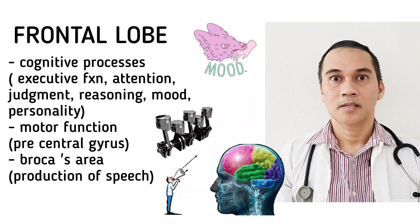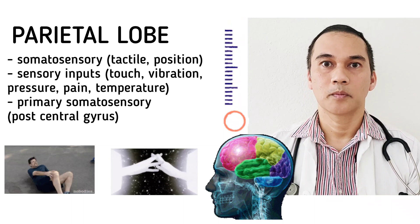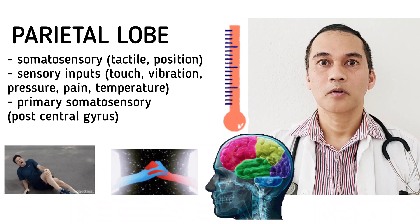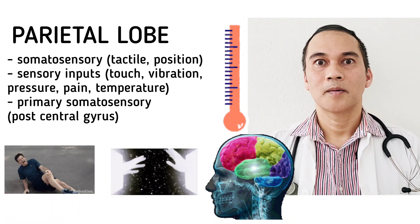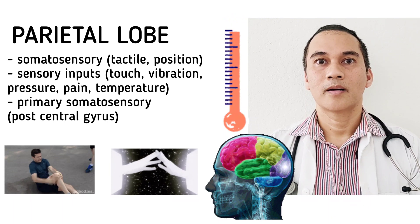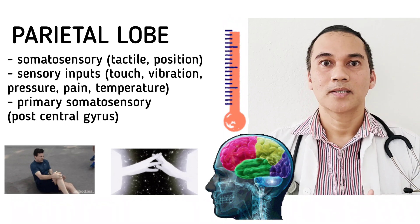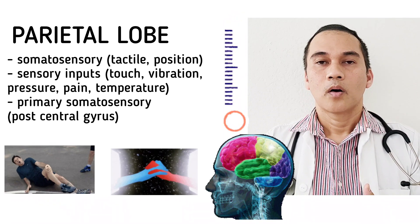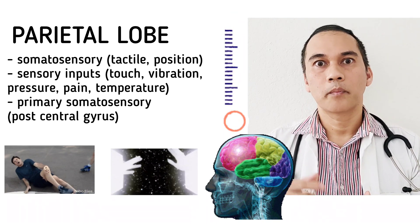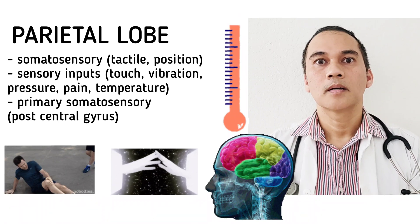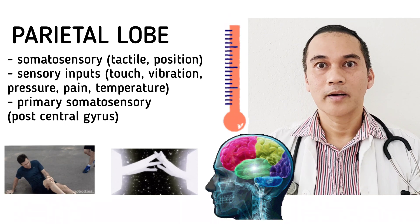Our parietal lobe is responsible for all sensory interpretation, proprioception, and our spatial relationship to space. Everything that we feel — temperature, pain — will go to the primary somatosensory cortex, which is the postcentral gyrus, and that is in the parietal lobe.